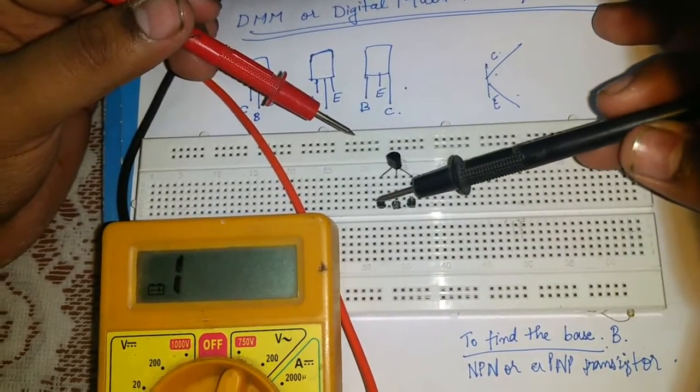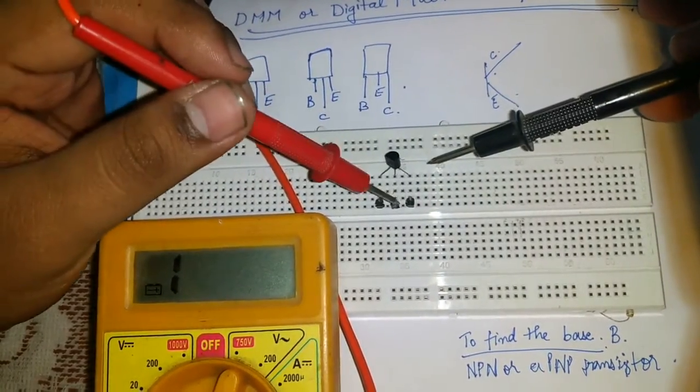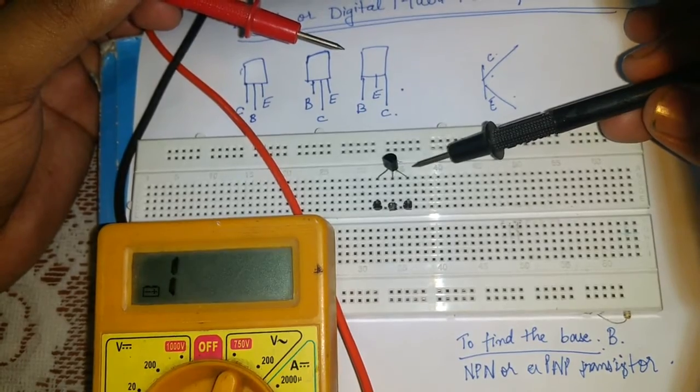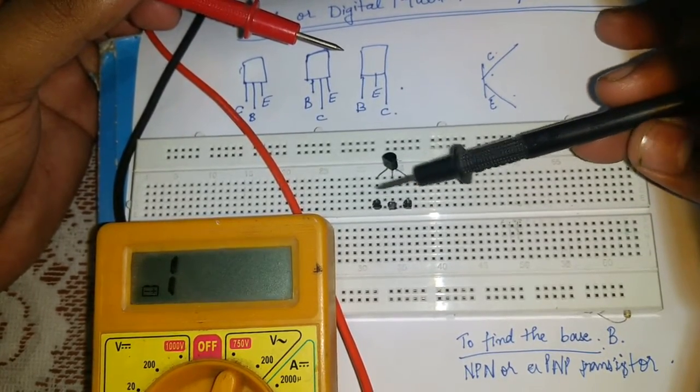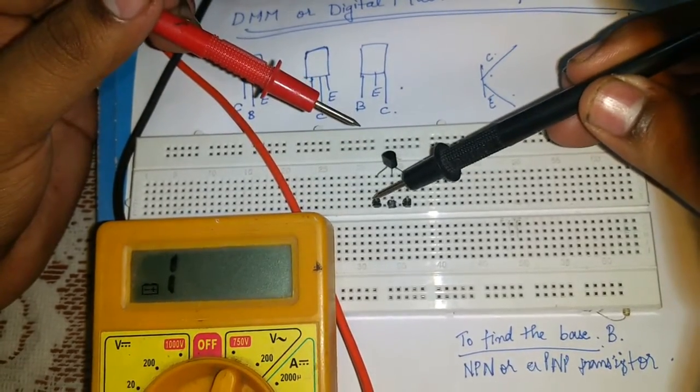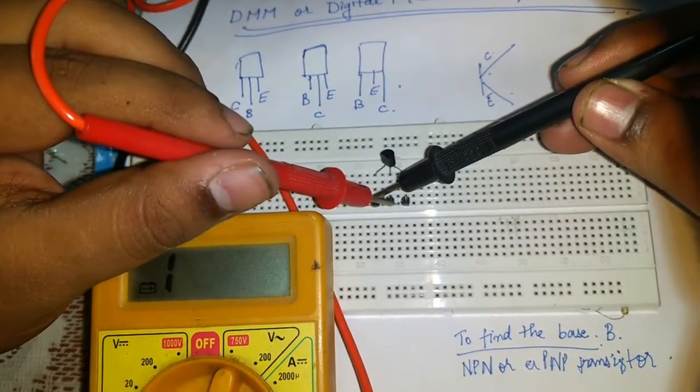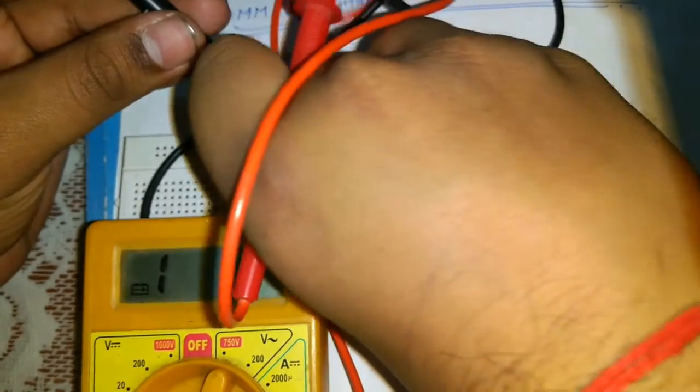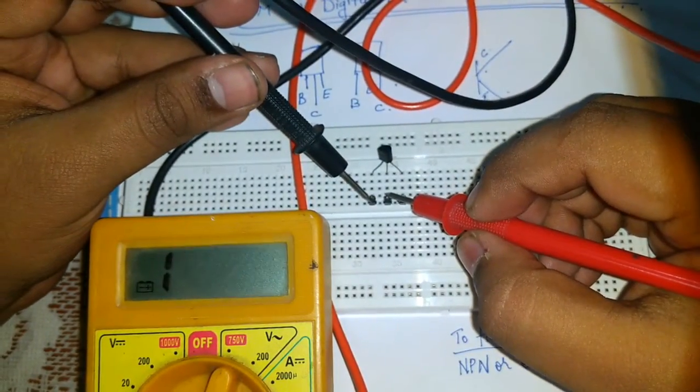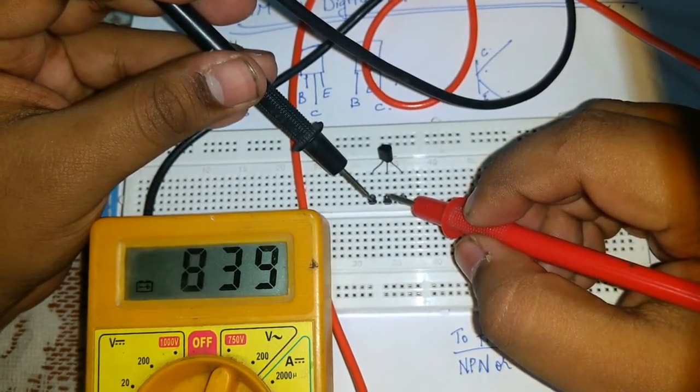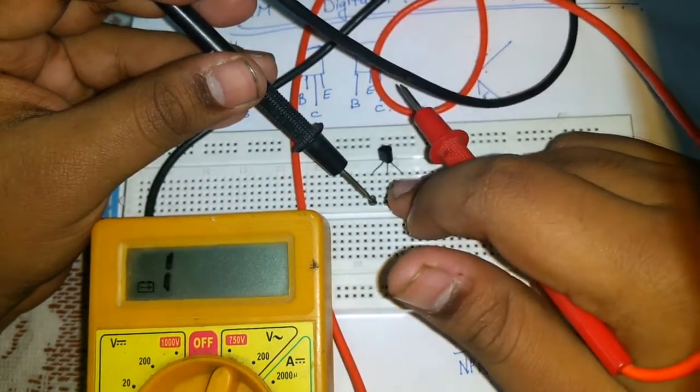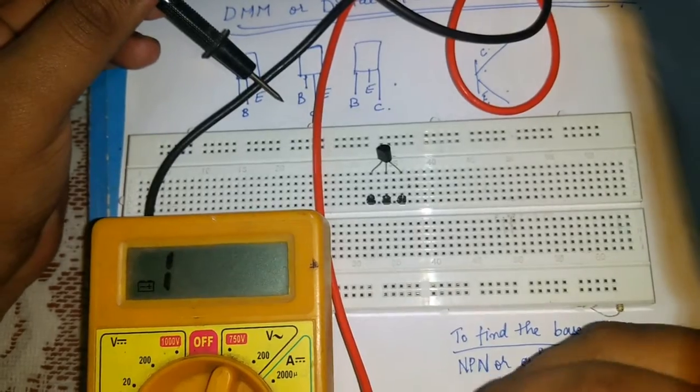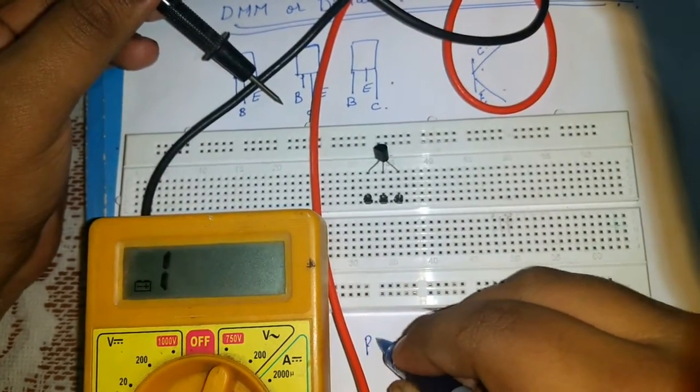So what we found is when we keep this black pin stationary and variating this red pin, we weren't getting anything. If we want to find the base, there should be both way deflection. That means if I keep this black pin here, I would have gotten the deflection here and here as well. But that's not the case here.